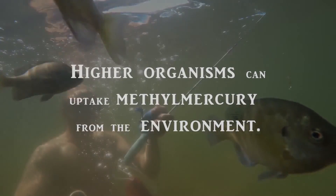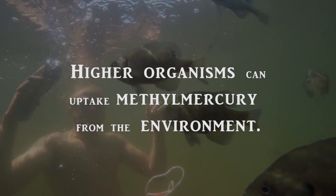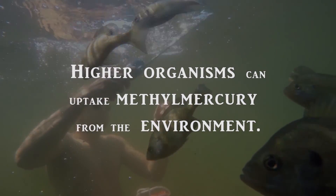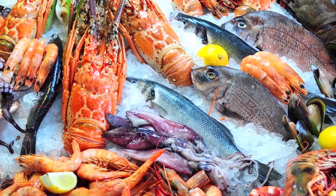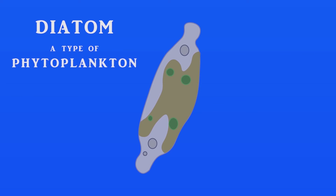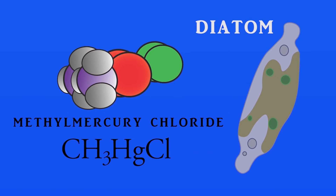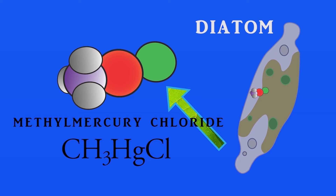Although higher organisms, like fishes or us, can uptake methylmercury from the environment, most of it comes from consuming methylmercury-containing food. Take this diatom for example — a phytoplankton, or an itty-bitty aquatic plant. Methylmercury is transported across its lipid membrane, affected by diffusion of its uncharged chloride complex.